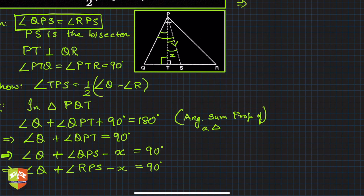Now ∠RPS can be written as—see, I can write that as ∠Q the first one, then ∠RPS. And ∠RPS can be written as ∠RPT minus x, isn't it?